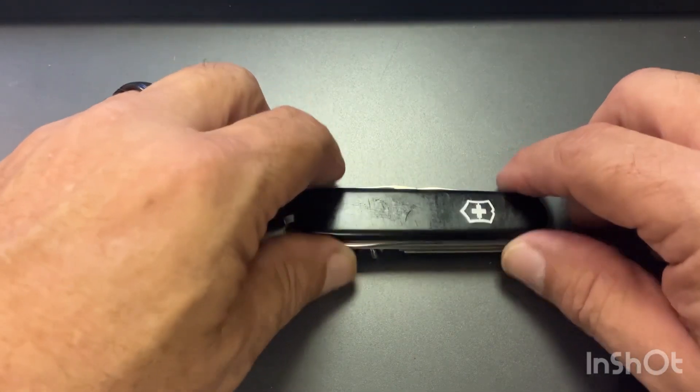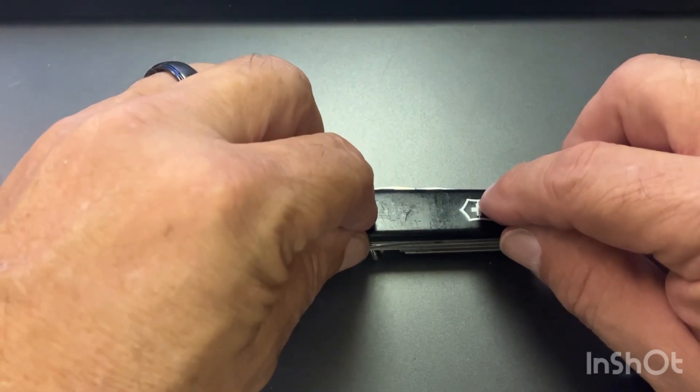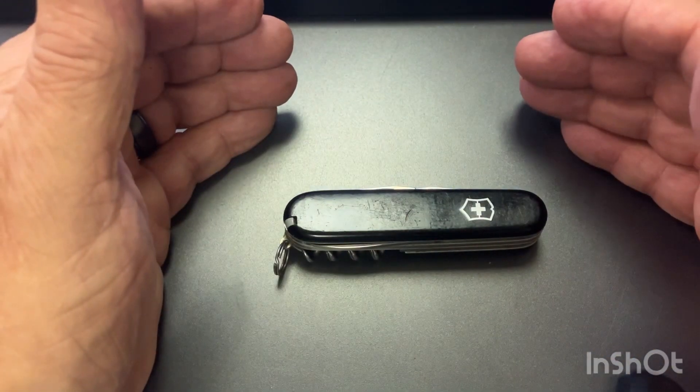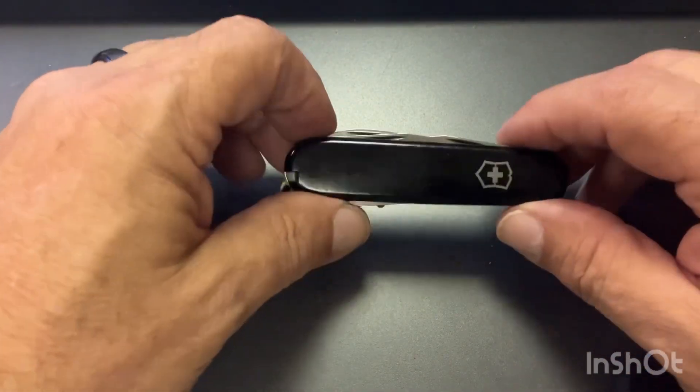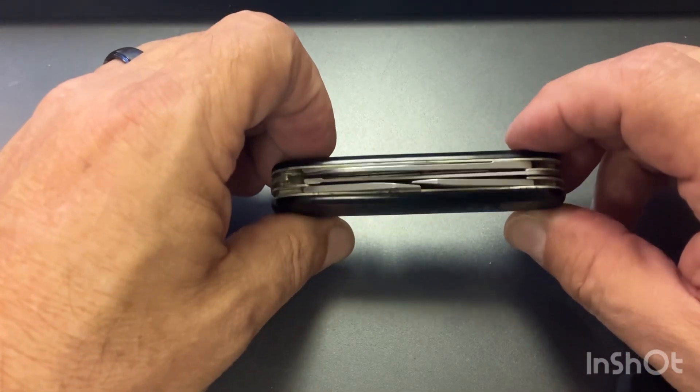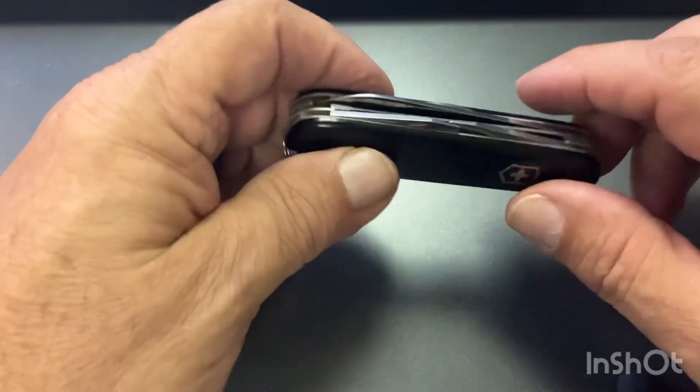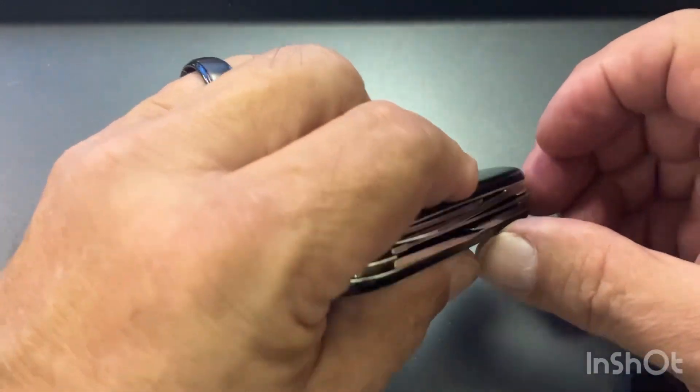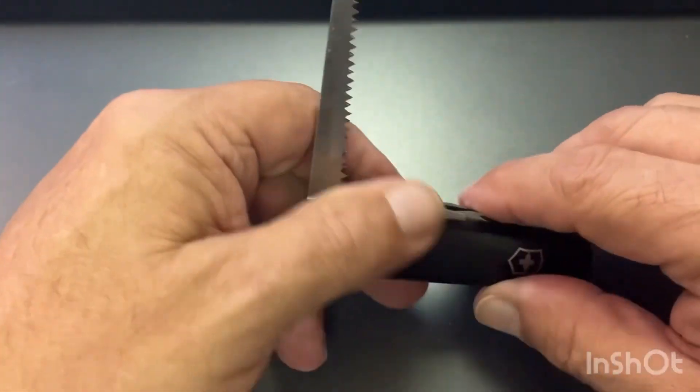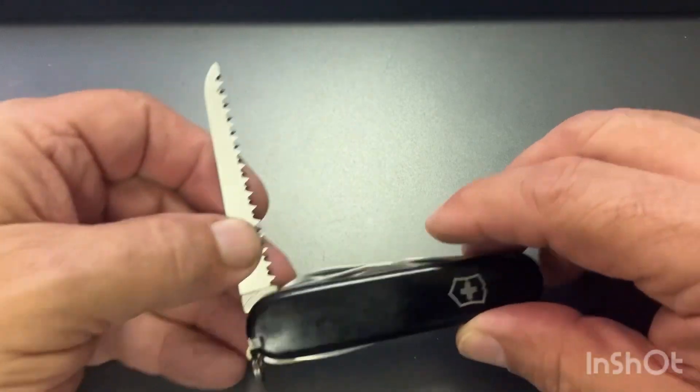Anyway, that's going to do it for SAC Saturday. And that's a Victorinox Camper. Probably the most notably known for having the saw blade on it, for those who need a saw blade.